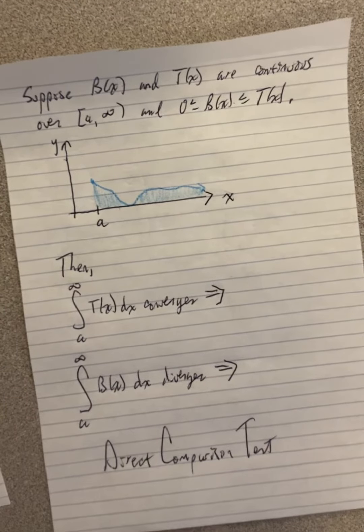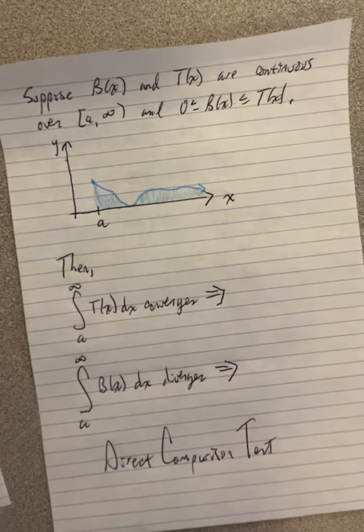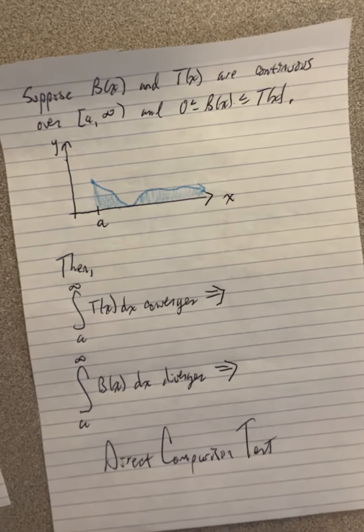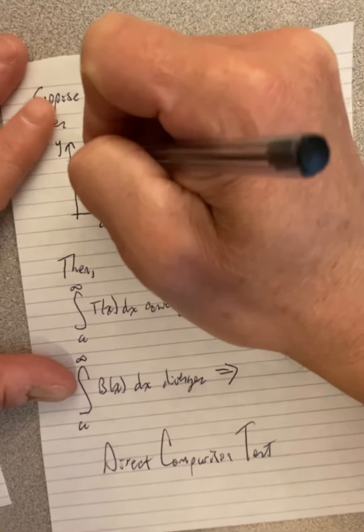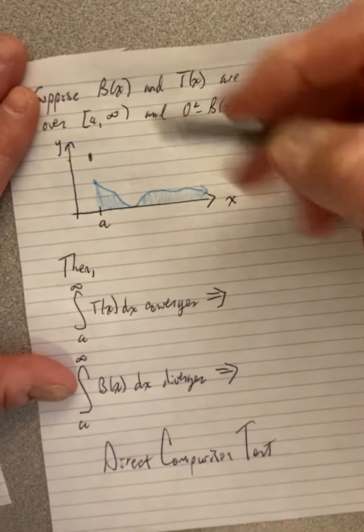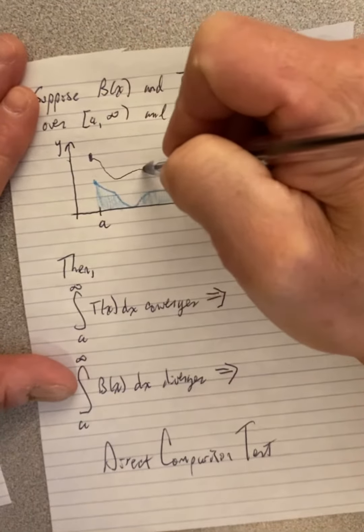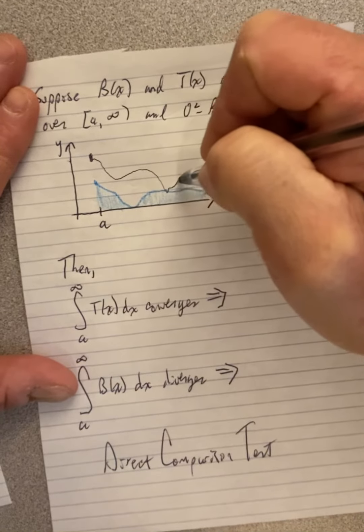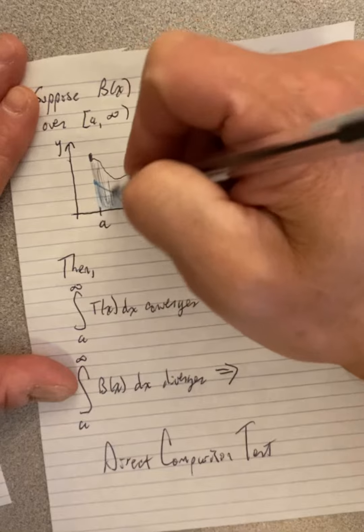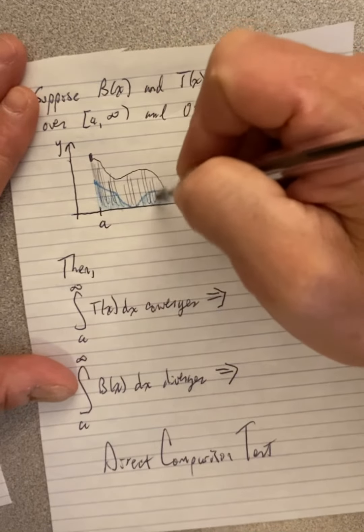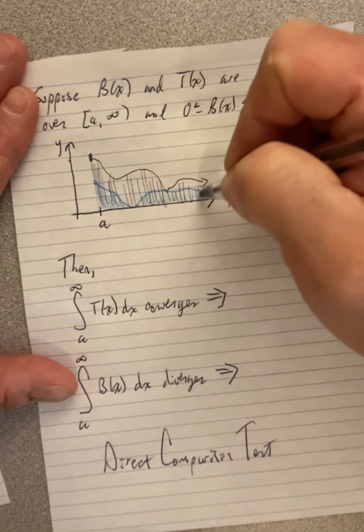And then we have a top function, which is T. I don't know what color starts with T, so I'll just use black. It's always above this function. It can touch this function, maybe it comes down and touches it somewhere, but it's otherwise always above. So there's this black area here if we were to integrate from A to infinity.